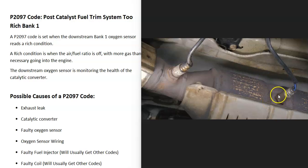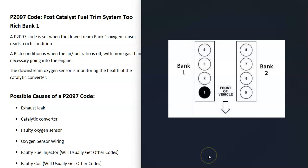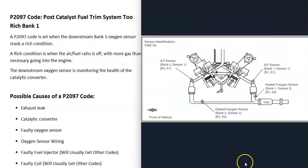If you have a V6 or V8 engine, bank one is always the side of the engine with the number one cylinder, and bank two is the opposite side. If you have a four-cylinder, it wouldn't matter — you'd only have one bank. When looking for these O2 sensors, it's a good idea to get a diagram for your specific vehicle just to know where they're all at. For example, this is a 2007 Camry with the 3.5-liter V6.